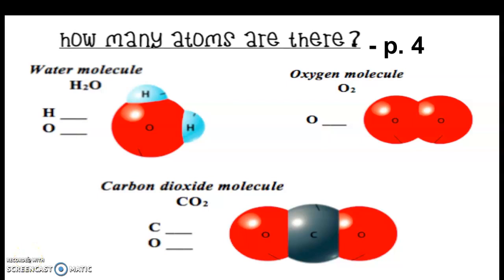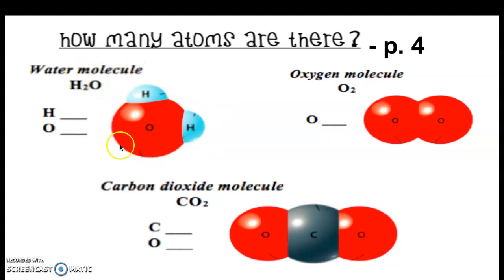Let's do a little bit more practice with counting atoms. In our first example, we have a water molecule, which we've already looked at. It looks like Mickey Mouse. This is H2O. We have a picture of our water molecule so you can see a visual representation, and we also have a chemical formula written out.